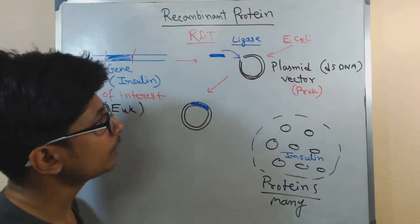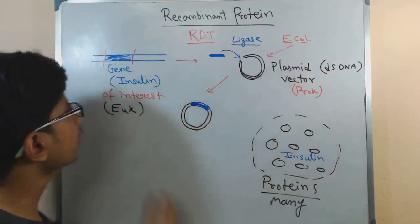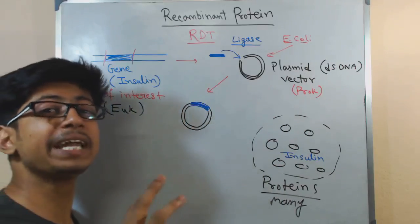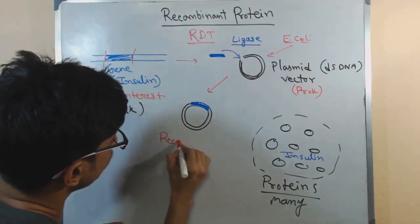Now this molecule, which is consisting of one part from the prokaryotic segment, that is the vector part, and another part is from the eukaryotic gene, that is the desired gene, this is called a recombinant DNA. This one is called a recombinant DNA molecule.